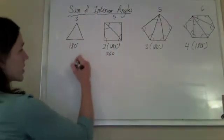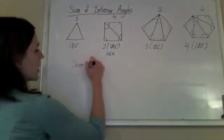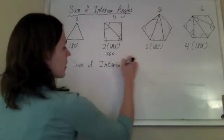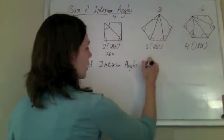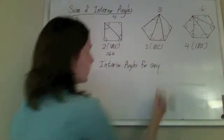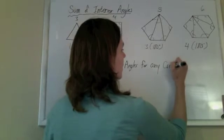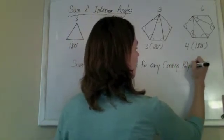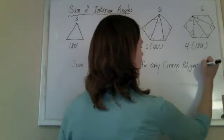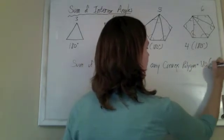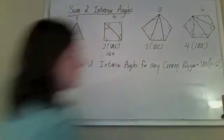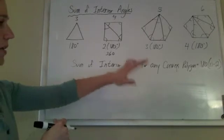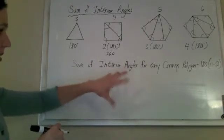So the sum of the interior angles for any convex polygon is 180 times n minus 2. That's our formula.